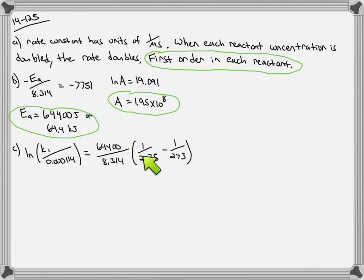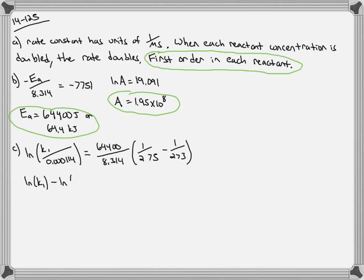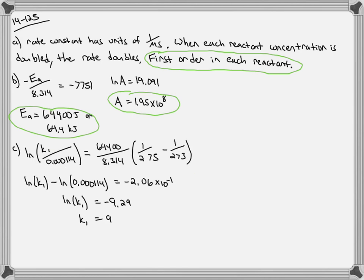The rate constant at 275 K is what we have; the rate constant at 273 K is what we're calculating. When using this format of the Arrhenius equation, the first k corresponds to the last temperature and the second k corresponds to the first temperature. Using log rules, natural log of k₁ minus natural log of the denominator k equals negative 2.06 times 10 to the negative 1. So the natural log of k₁, the rate constant at 273 K, is negative 9.29, giving k₁ equal to 9.27 times 10 to the negative 5.